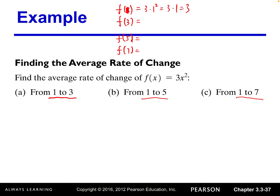f(3) = 3 times 3 squared = 3 times 9 = 27. f(5) = 3 times 5 squared = 3 times 25 = 75. When x equals 7: 3 times 7 squared = 3 times 49 = 147.